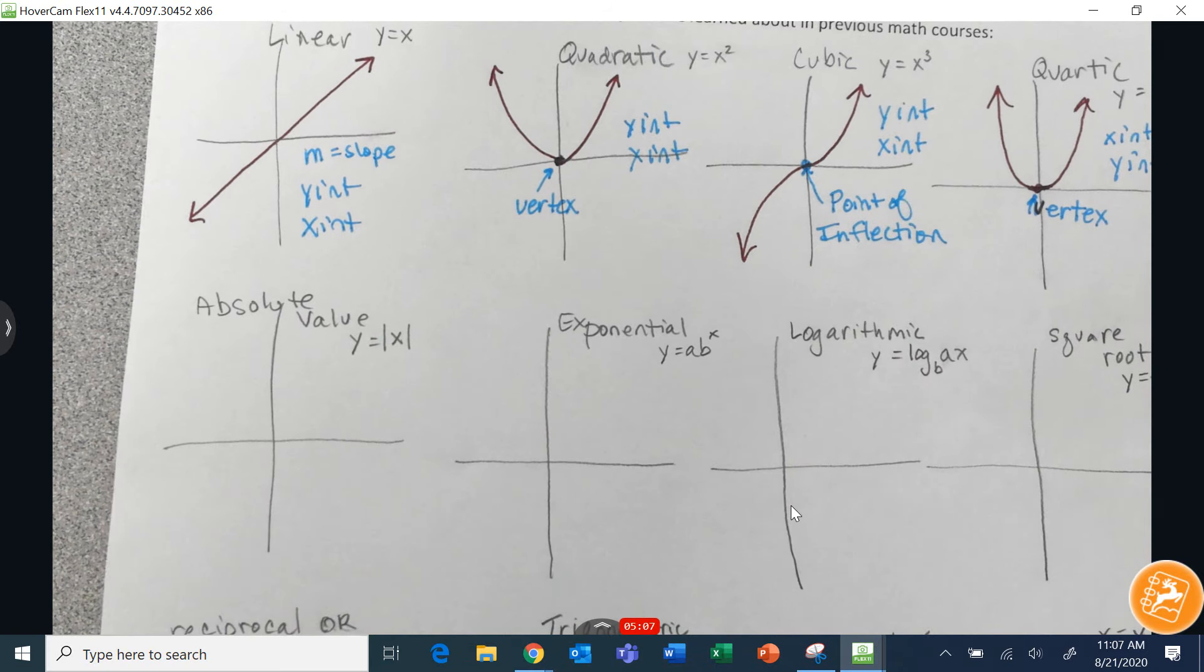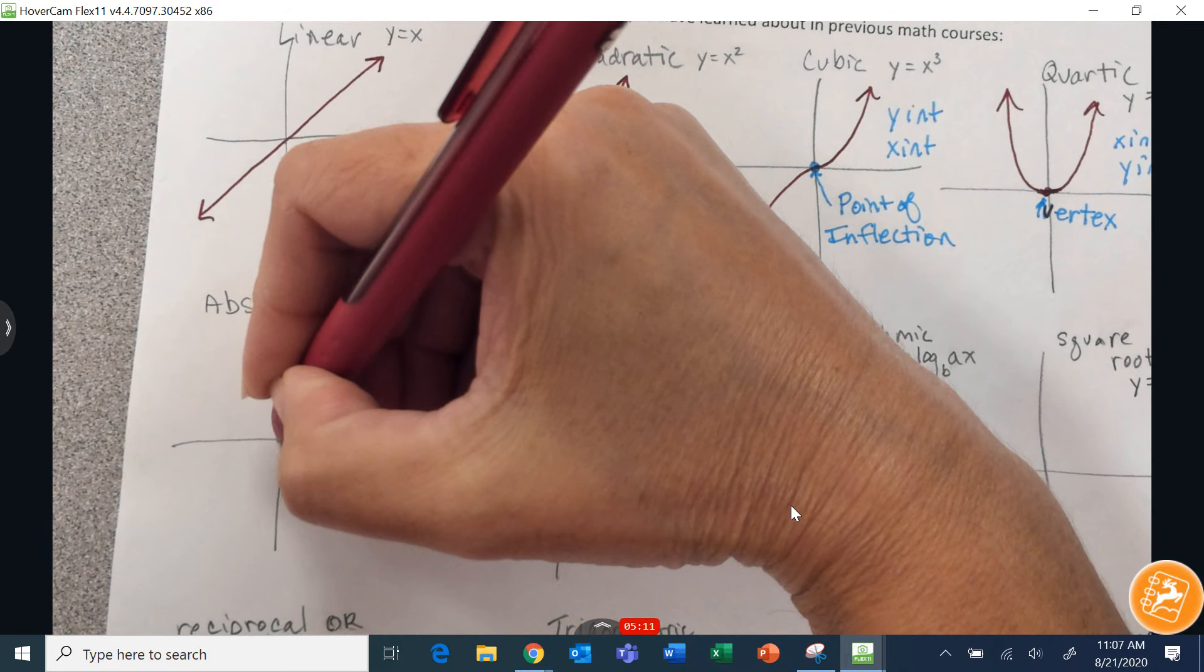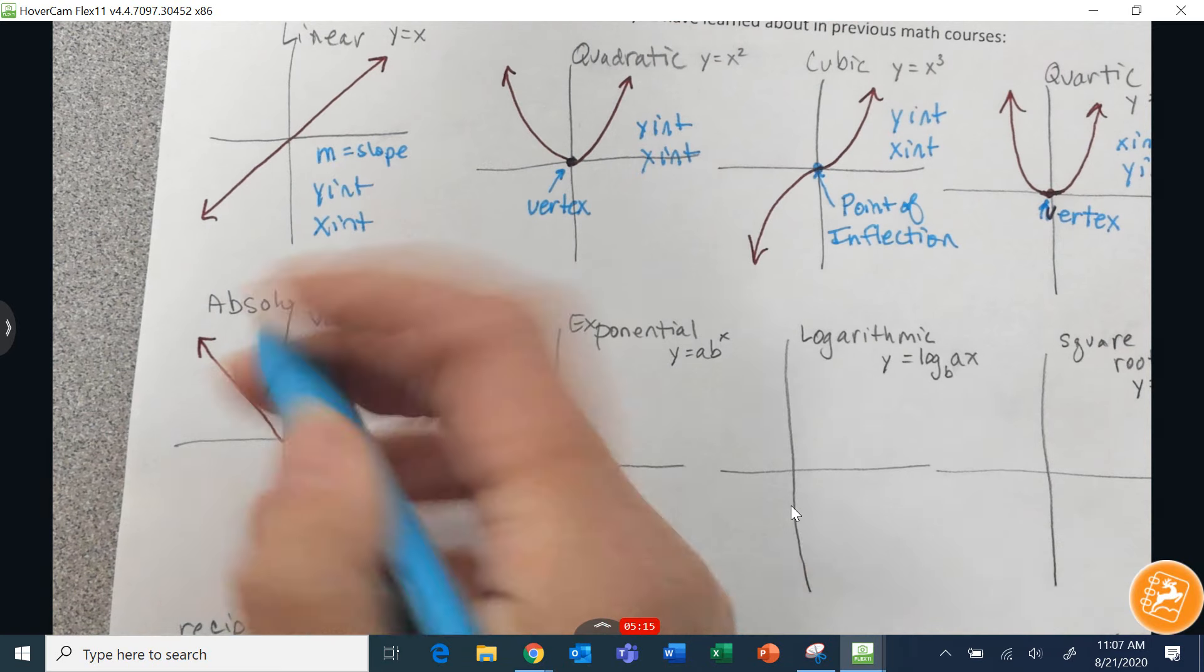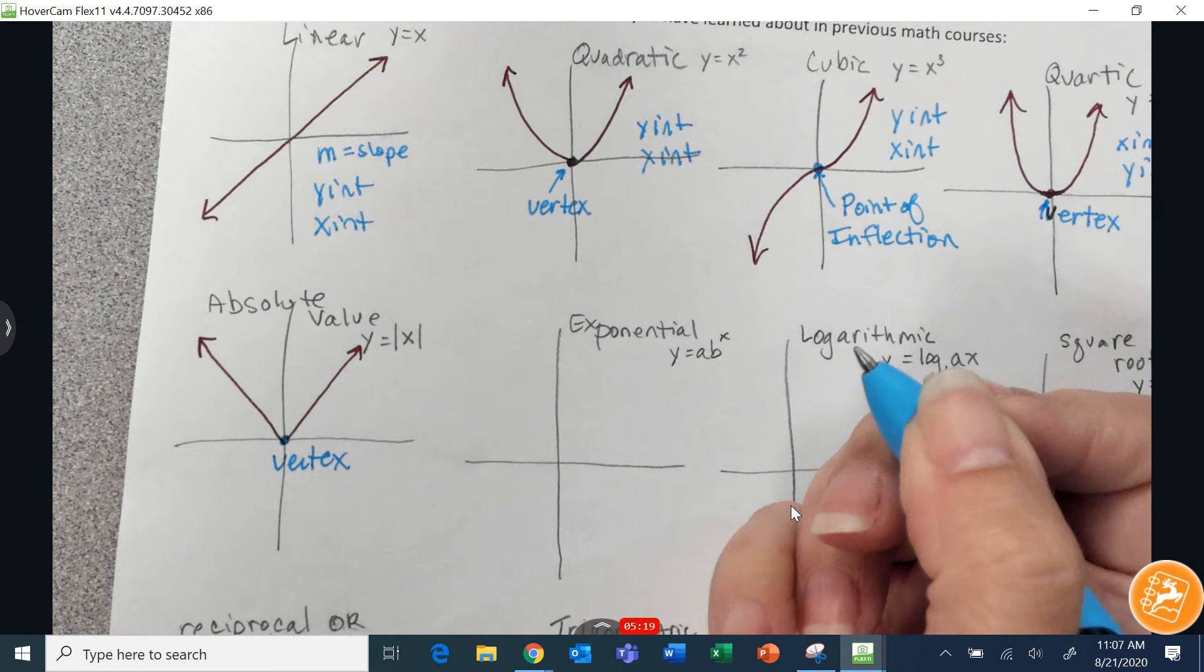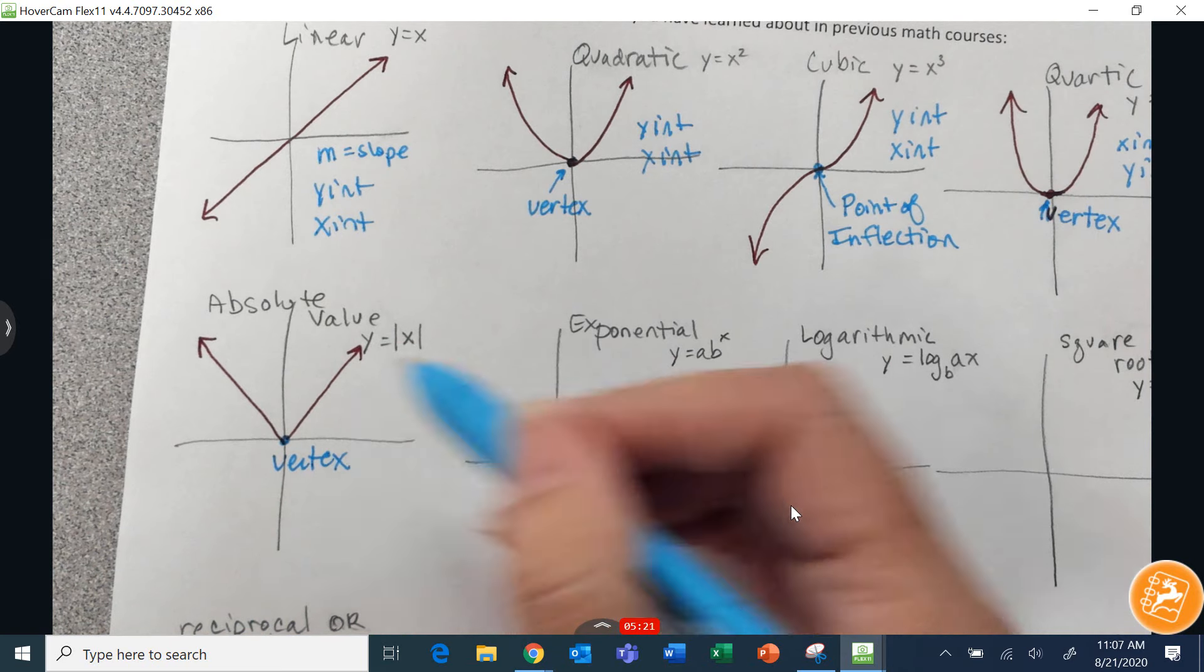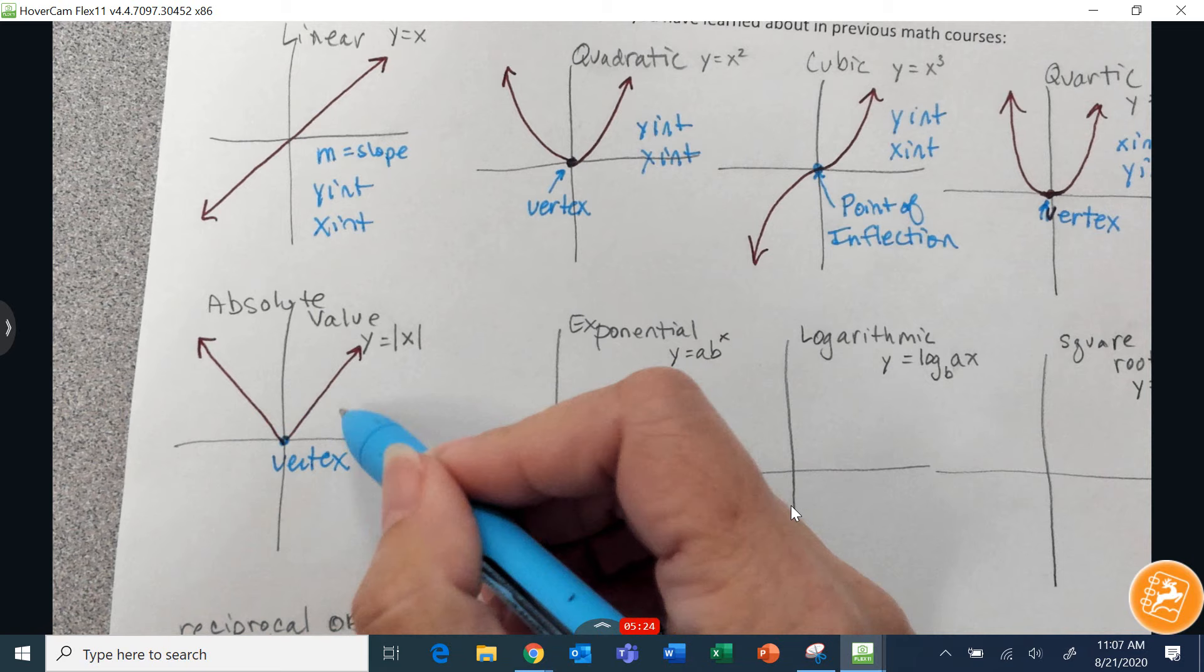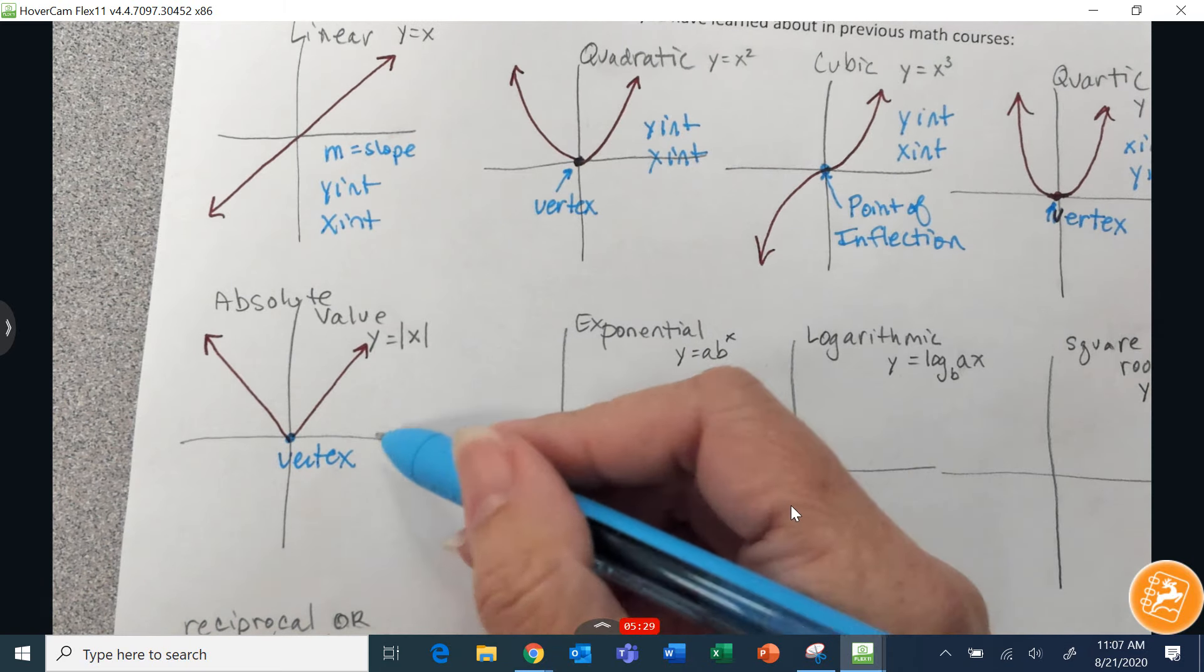So back to my graphs. Absolute value, we know, is a v-shape. And absolute value also has a vertex. And absolute value kind of has slope, just two different slopes, one on each side, one is positive, and one is negative. We could also have y-intercepts and x-intercepts.